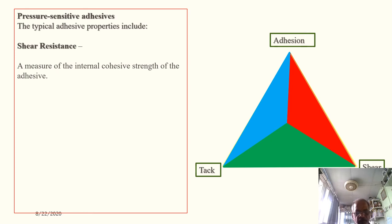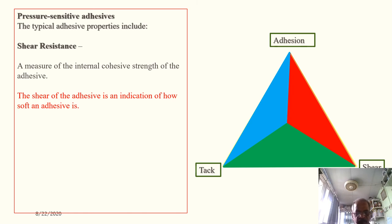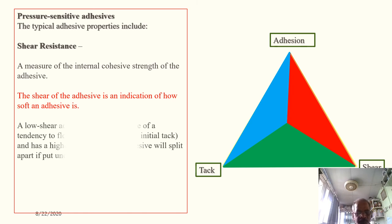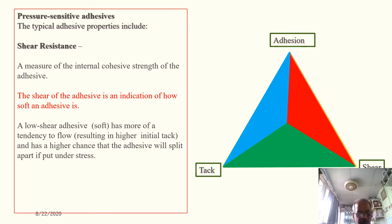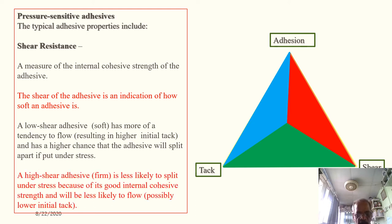Shear resistance is a measure of the internal cohesive strength of the adhesive. Low shear strength means a softer adhesive that has more tendency to flow, resulting in higher initial tack but a higher chance the adhesive will split apart under stress. A high shear adhesive film is less likely to split under stress due to its good internal cohesive strength, but may have lower initial tack.